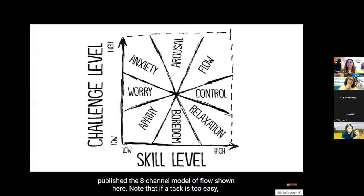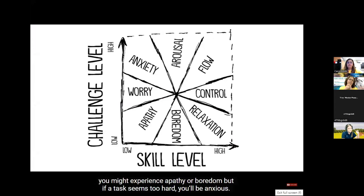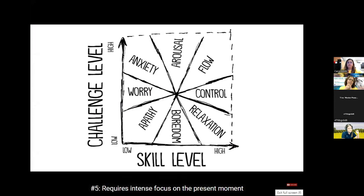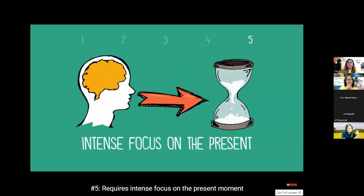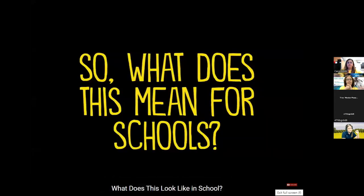[Video] In 1987, researchers published the eight-channel model of flow. If a task is too easy, you might experience apathy or boredom. If a task seems too hard, you'll be anxious. The goal is to match both the skill level and the task at hand. And number five: it requires intense focus on the present moment.